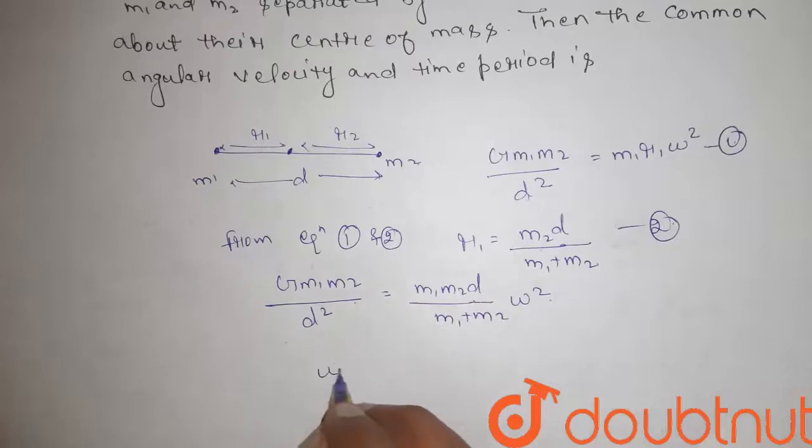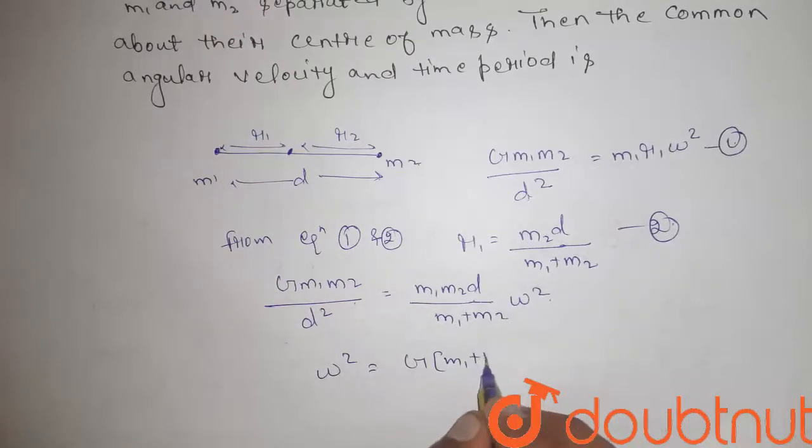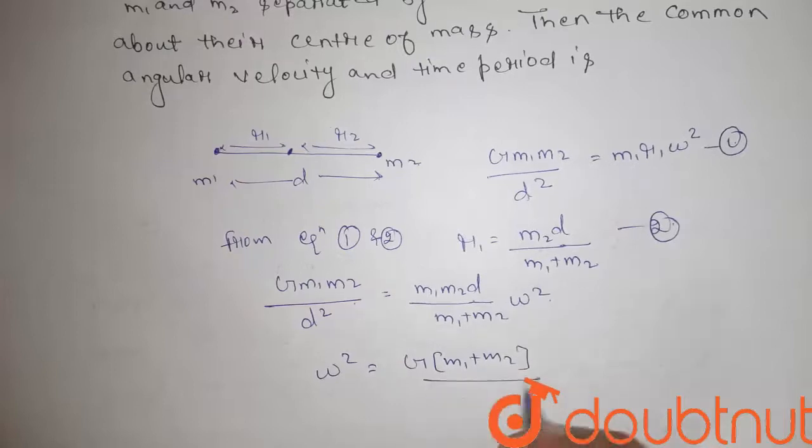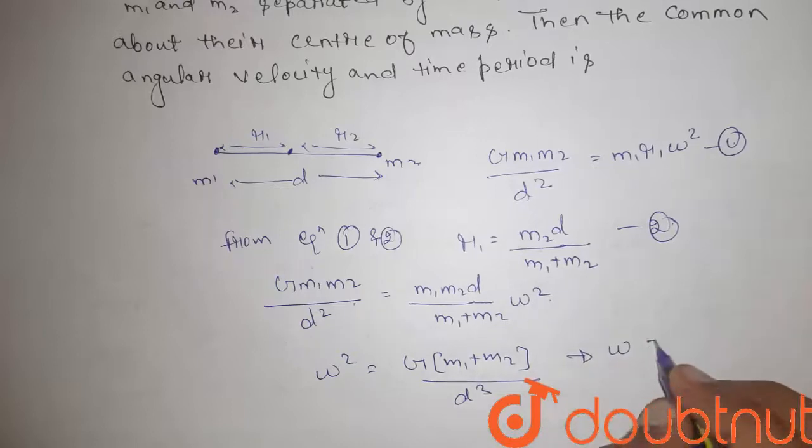From here we get the value of omega square. That is G times m1 plus m2 divided by d cube. Or from here we get the value of omega.